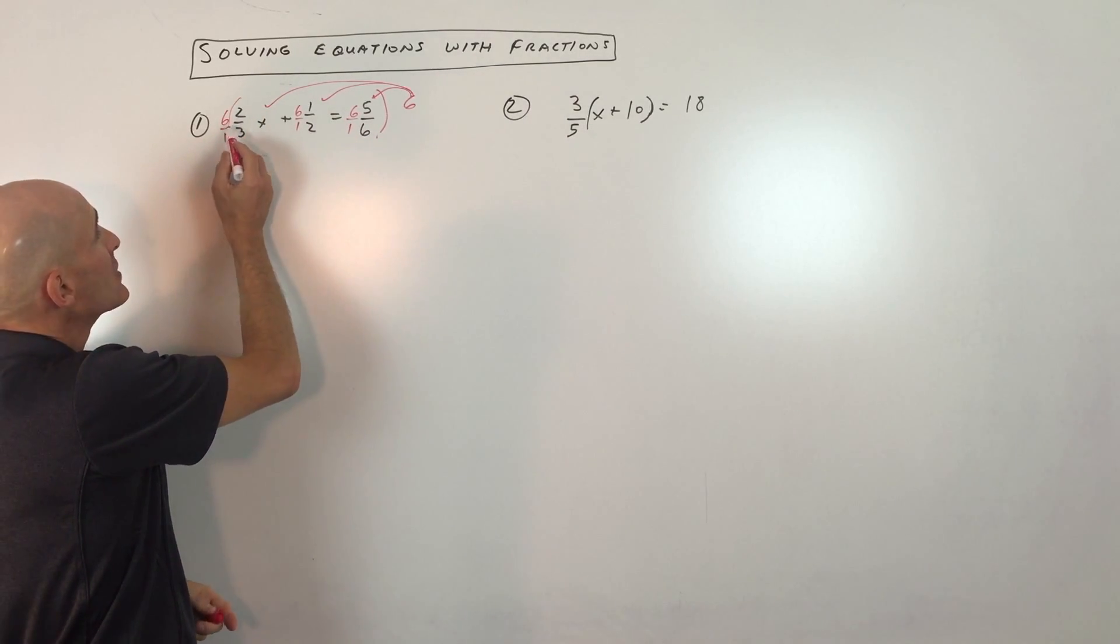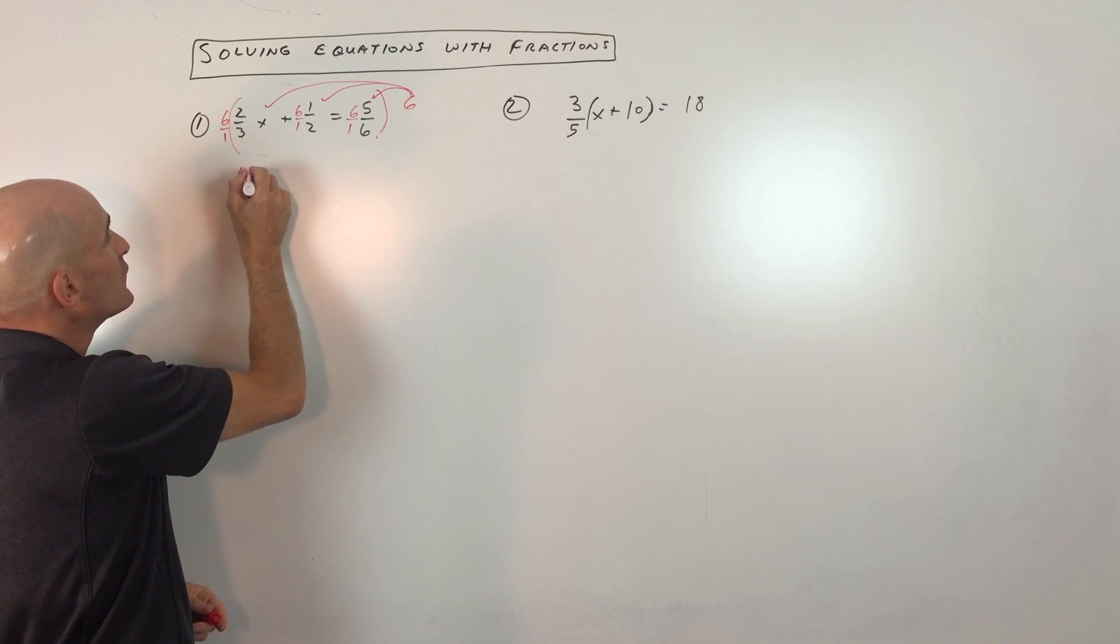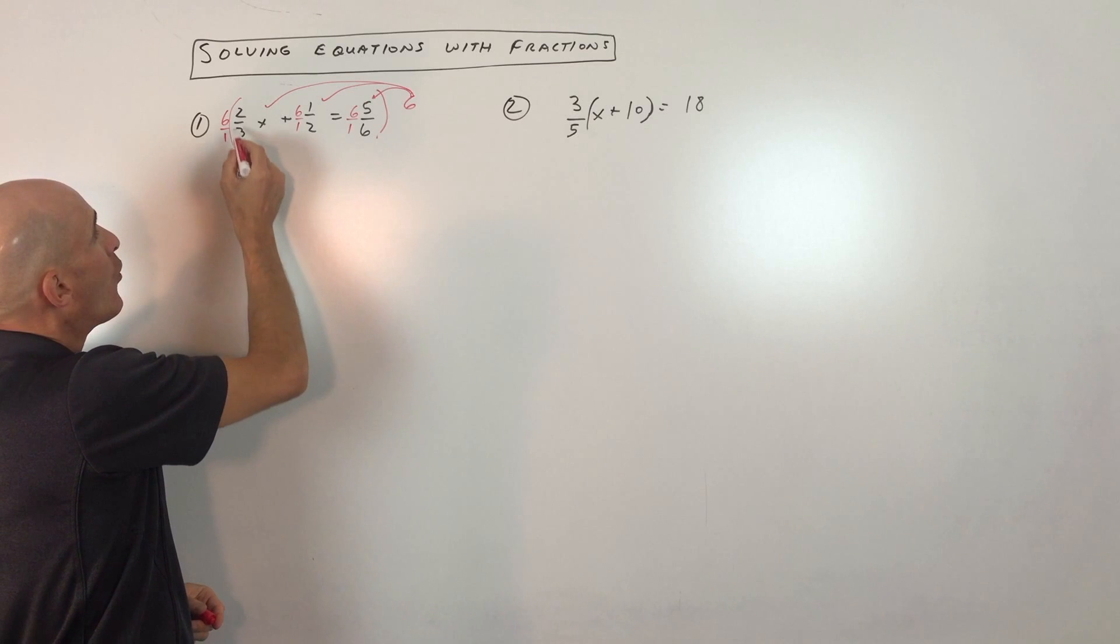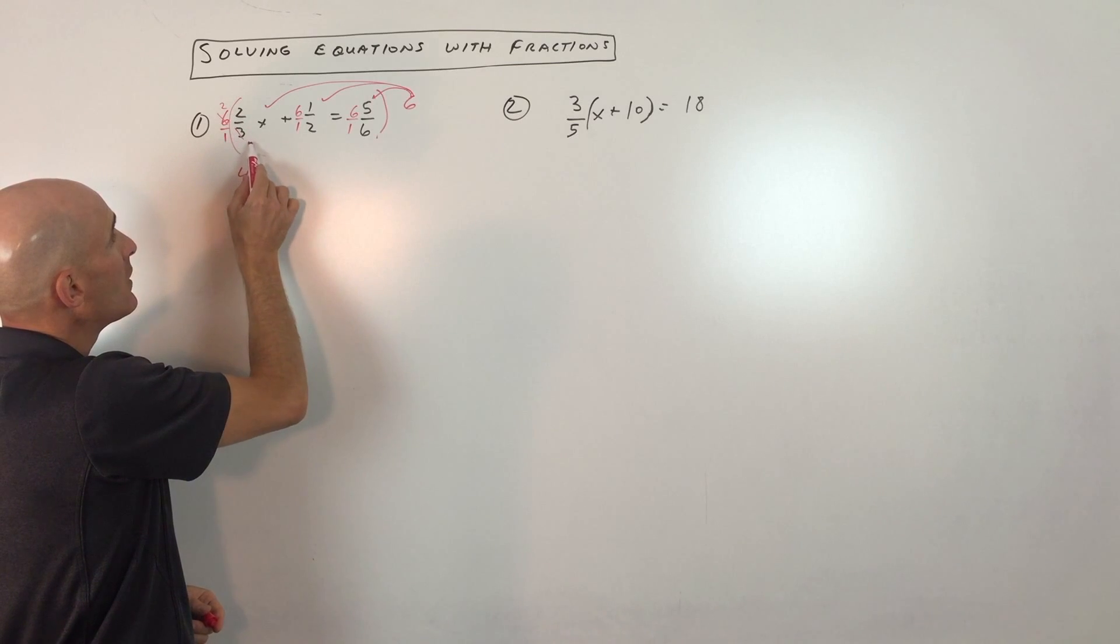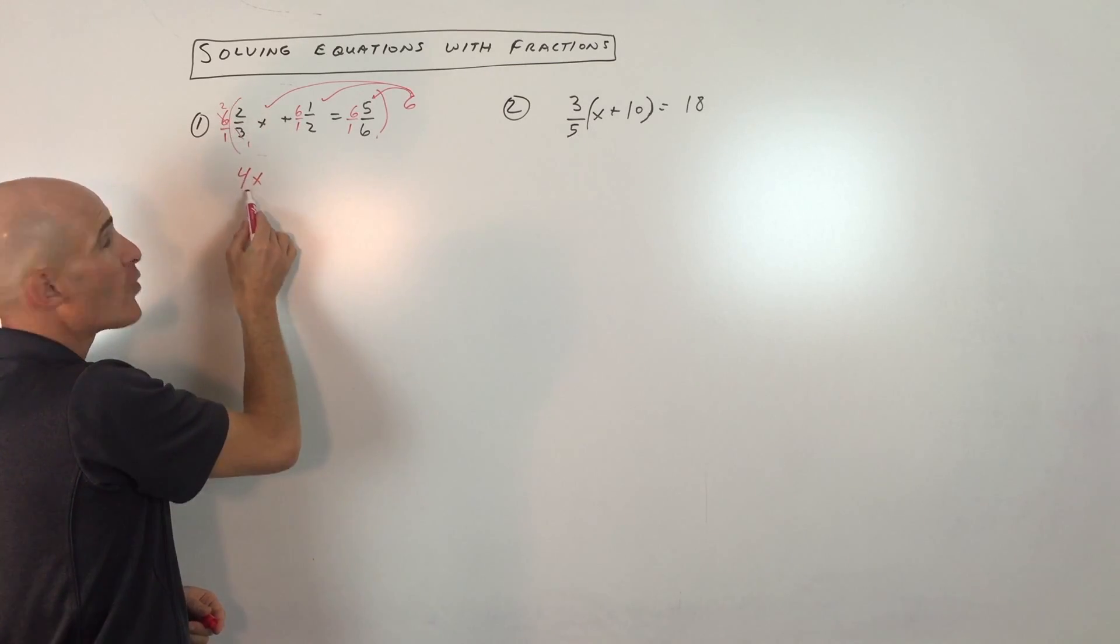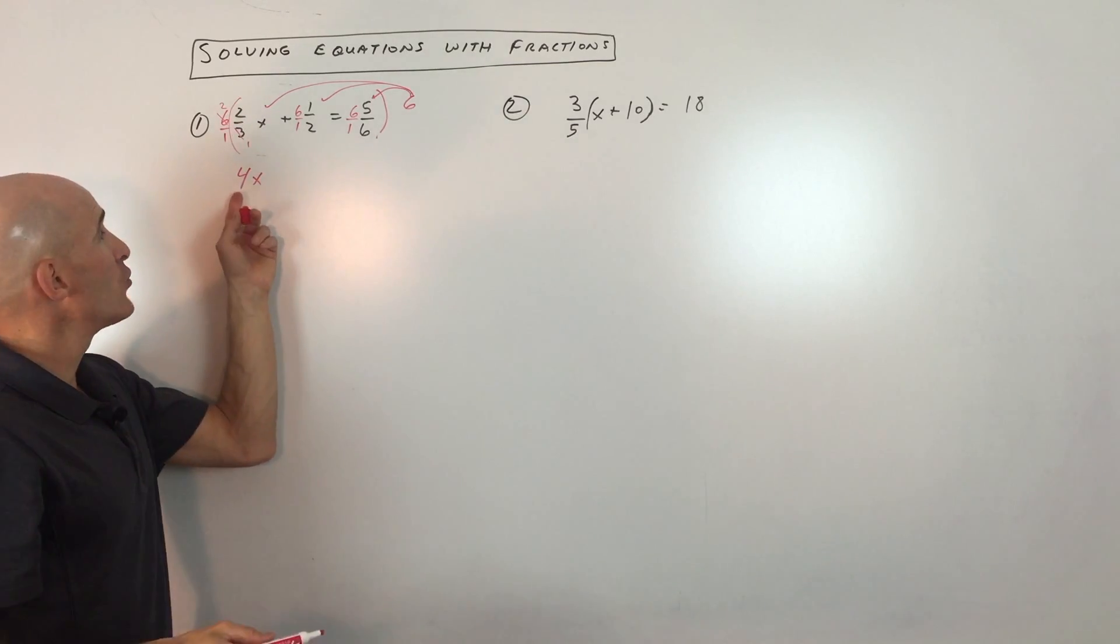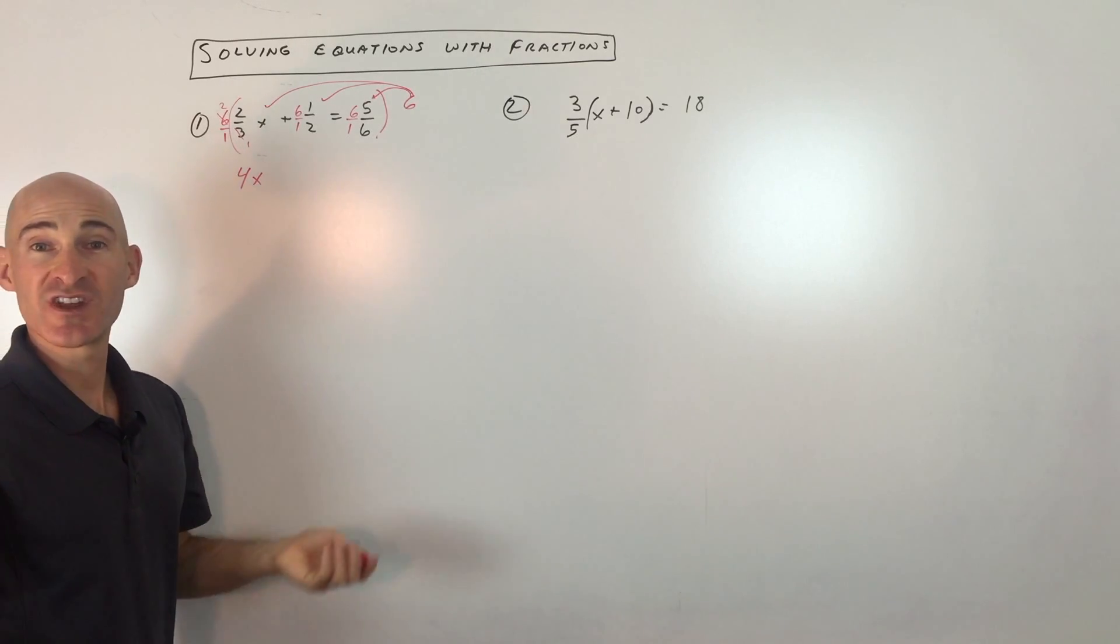And then what you'll notice here is you can do a couple things. You can say 6 times 2 is 12, divided by 3 is 4x. Or you can cross-reduce. You could say 3 goes in here once, 3 goes in here twice, 2 times 2 is 4, 1 times 1 is 1, 4 divided by 1 is 4. Either way, you don't have a denominator anymore, which is a nice thing.